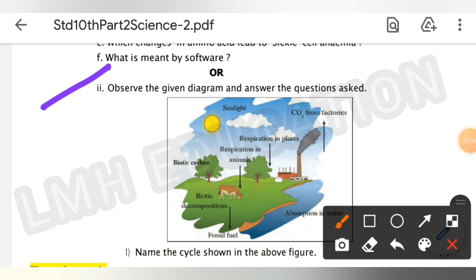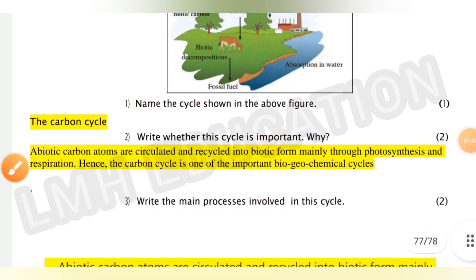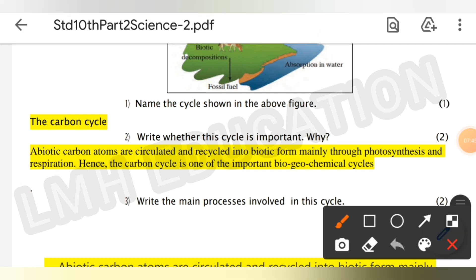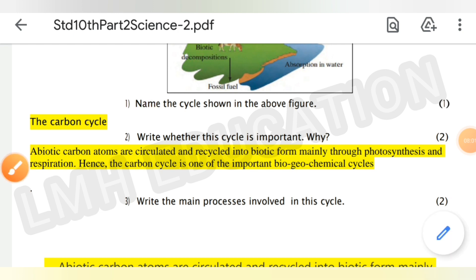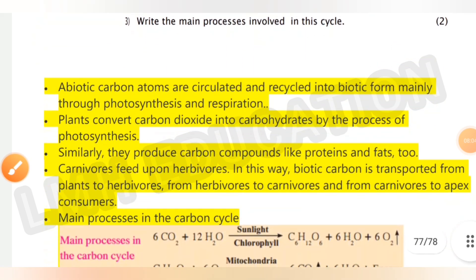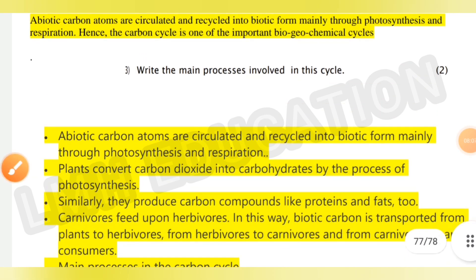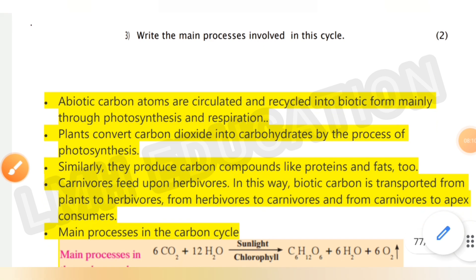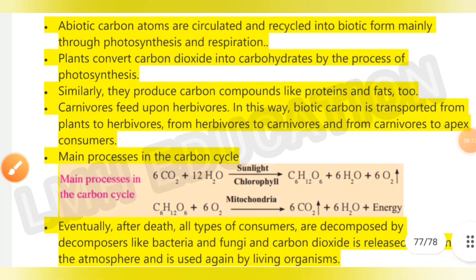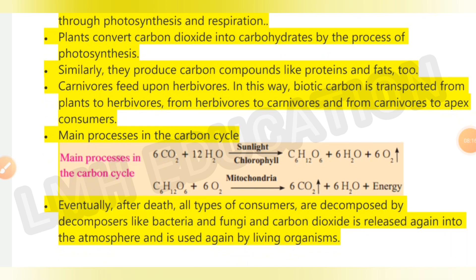Observe the given diagram and answer the questions. Name the cycle shown — this is the carbon cycle. Write whether this cycle is important and why: abiotic carbon atoms are circulated into biotic form mainly through photosynthesis and respiration, hence the carbon cycle is one of the important biogeochemical cycles. Next, write the main processes involved in this cycle — the answer is shown on screen. You can pause the video to write the answer or take a screenshot.